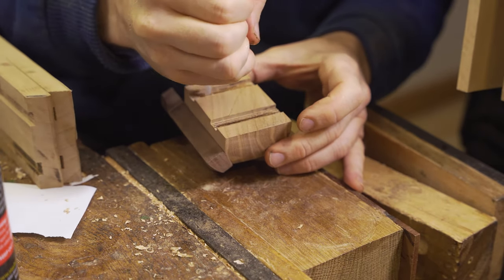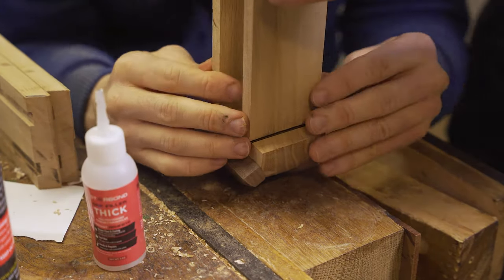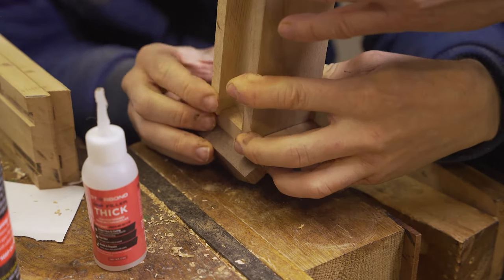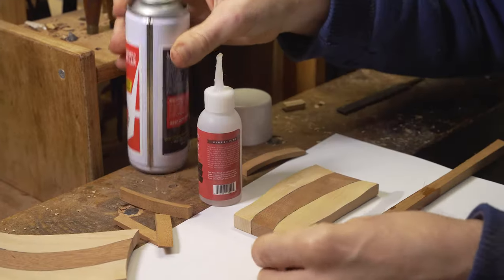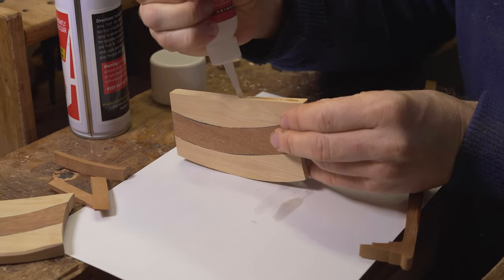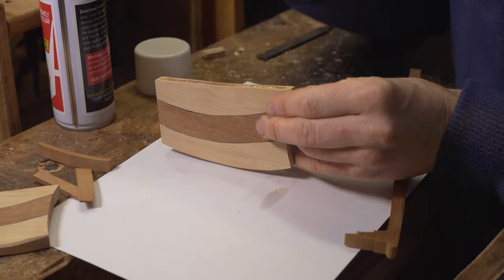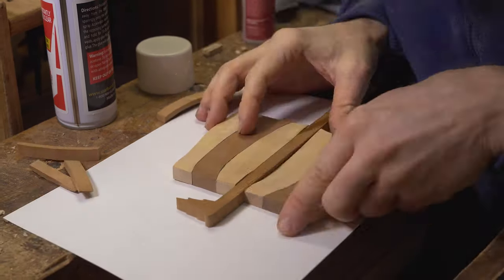So again we're using that superglue, Starbond superglue and the accelerant to put these four parts together. We then turn our attention to the mast and the sail and superglue that together. We're using the coloured superglue to add definition between the contrasting colours.